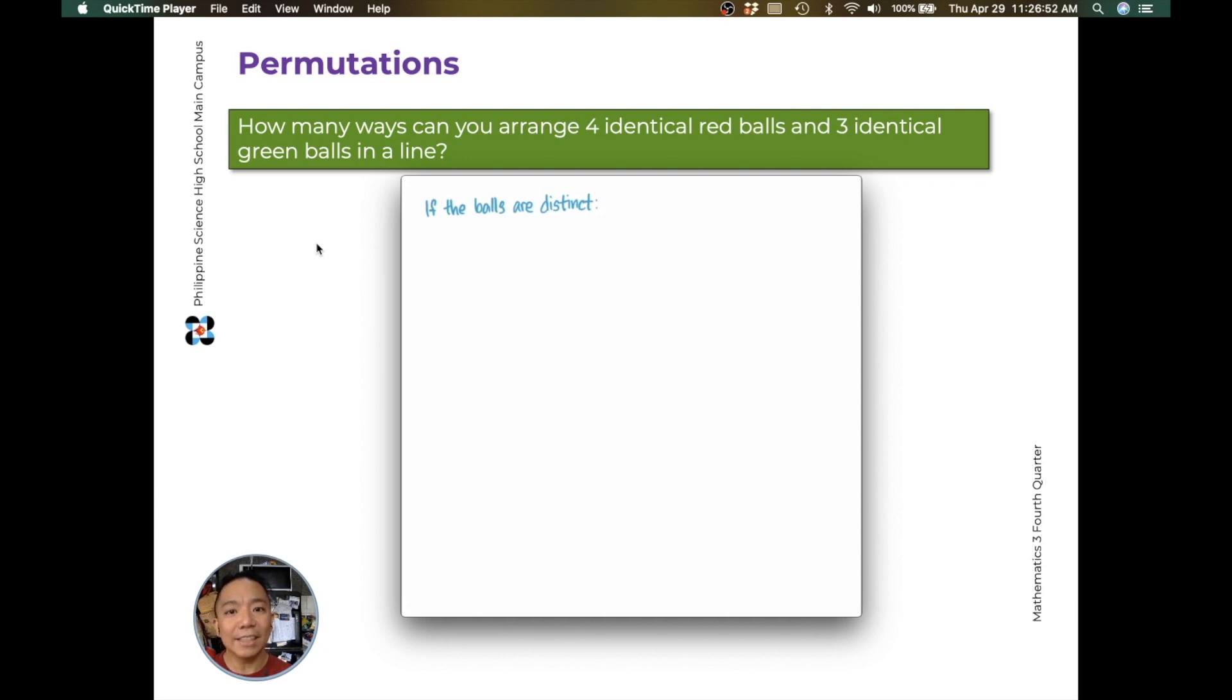So, suppose the balls are distinct. We can differentiate the 4 red balls. And there would be 7 factorial ways to arrange these balls, because we have 7 balls. Let's look at one particular arrangement. So, there are two red, two green, one red, one green, one red. So, this is just one possibility out of all possible arrangements.